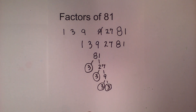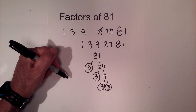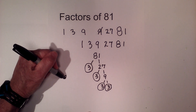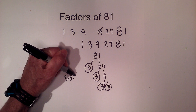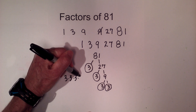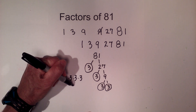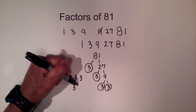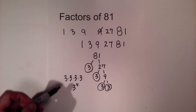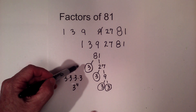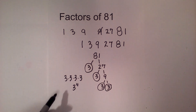So the prime factors of 81 is 3 times 3 times 3 times 3, which you can also write as 3 to the 4th power. So there we go — the factors of 81 and also the prime factorization of 81.